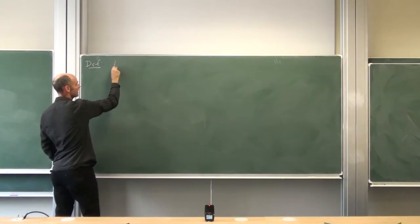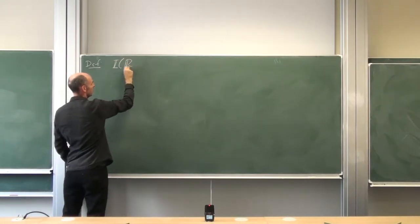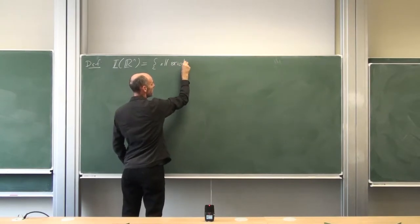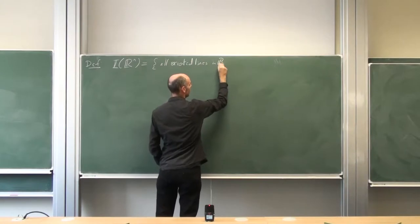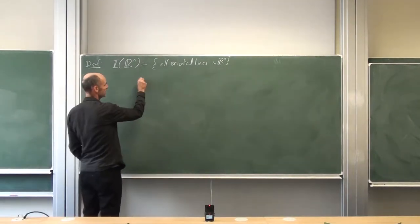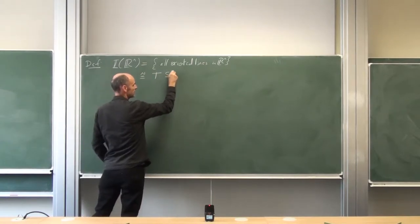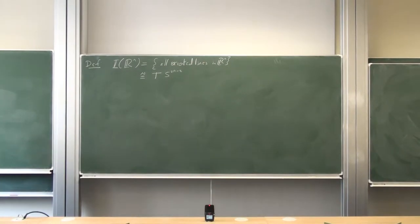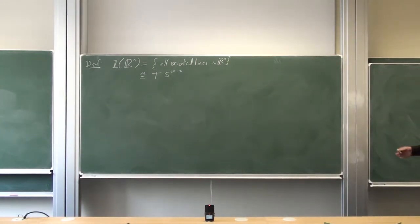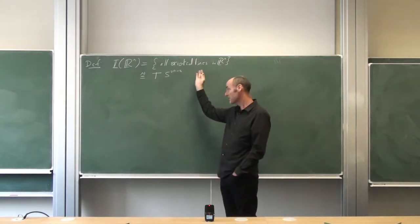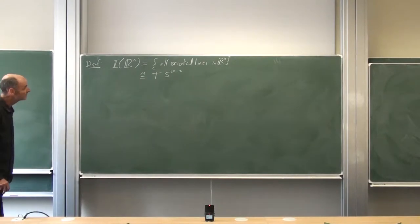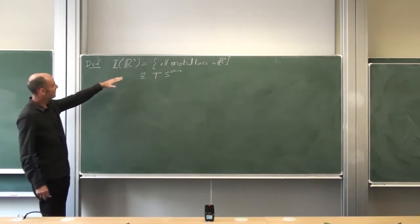Let me start with a simple definition. Every oriented line corresponds to a point in this space, and it's not too hard to see that this is the tangent bundle to the (2n−2)-sphere. There's a reasonably straightforward way to see that it's a manifold of that dimension: take the (2n−2)-sphere, look at all tangent vectors to it — that gives you the space. It's a model for the space of all oriented lines.